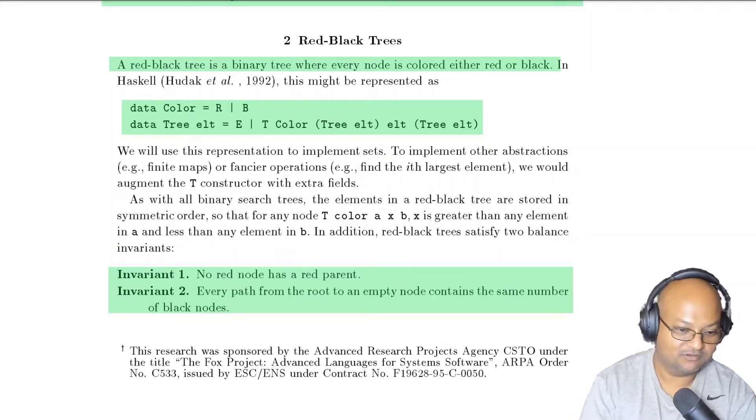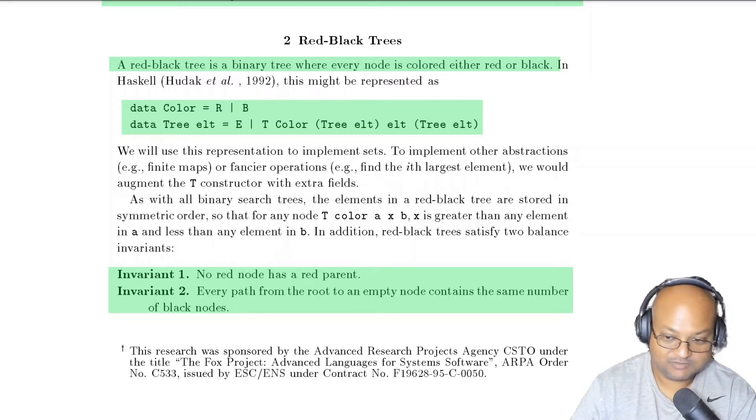I don't want to go into all the background about red-black trees, but very briefly, they are balanced binary search trees that give you order log n lookup, insertion, and deletion. In addition to a standard tree node, which holds an element as well as a left child and a right child, in a red-black tree each node is also assigned a color, which is either red or black. And every node and the tree as a whole must satisfy these two invariants.